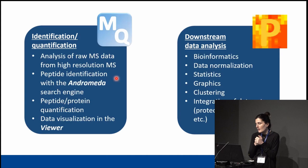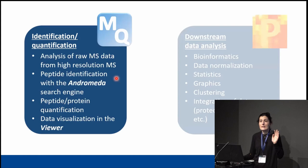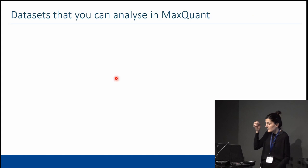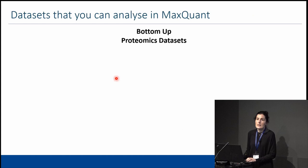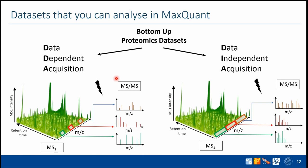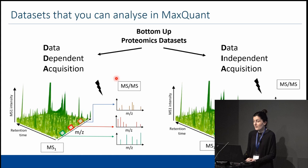Today is a MaxQuant day, specifically a DDA MaxQuant day, though we have many tutorials about Perseus and theory covered in other sessions. In MaxQuant, we run only shotgun proteomics datasets — bottom-up, not top-down. We can analyze both DDA and DIA data sets. There may be a misunderstanding about this, but MaxQuant can actually analyze both DDA and DIA data. Tomorrow there will be more information about how MaxQuant handles DIA data.